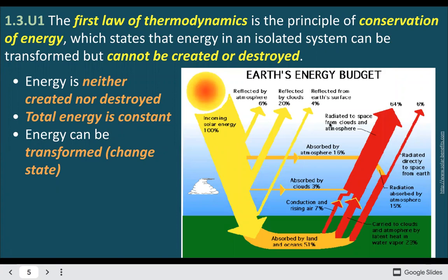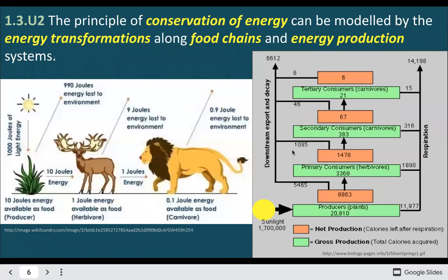Looking at energy from the sun, you'll see that all of that energy goes somewhere. Even though only a portion is absorbed by the land, if you add up all of these numbers, they'll add up to 100% because the total energy input should equal the output. You also see this in food chains.